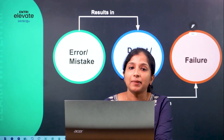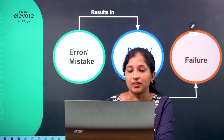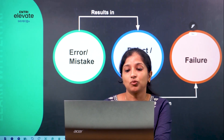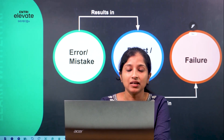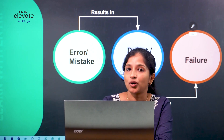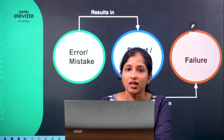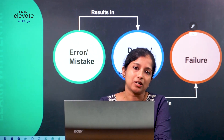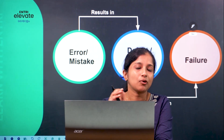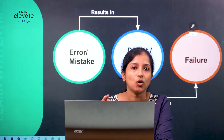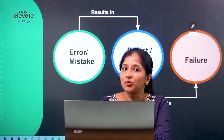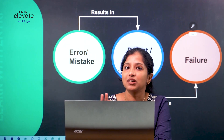When we start to measure an application, there are three things: errors or mistakes, defect or fault or bug, and failure. These are the three key terms.